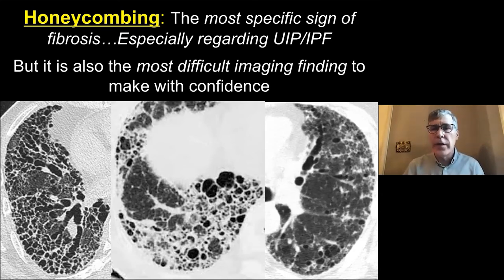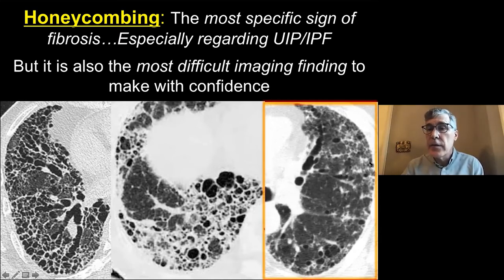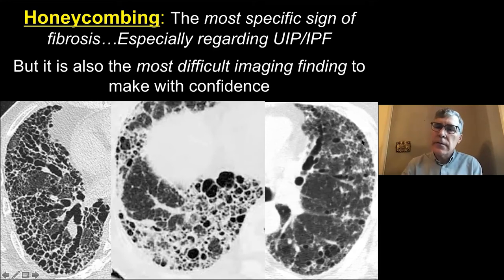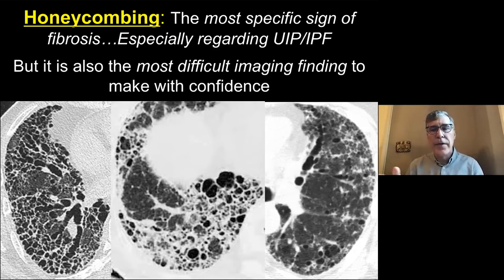So look carefully: are the cysts right up against the pleura? Yes — they're heaped up, there's traction bronchiectasis, irregular visceral pleura, peripheral distribution — that's UIP with honeycombing. This next one gets more difficult. Is this honeycombing? I think it is — I'm moderately sure. But it's tough, and if I'm not sure, I'm probably not going to come down totally on UIP, although you can tell by the distribution.